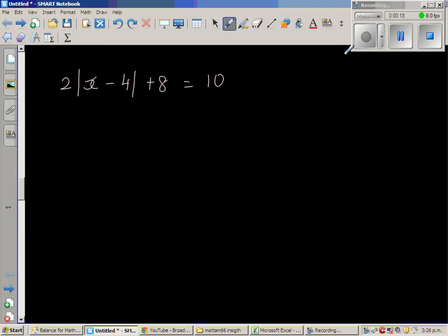So you treat it as you're solving a simple linear equation. When you're solving an equation, we want to isolate the x. The first thing that we want to eliminate or get rid of is this plus 8. So if we want to get rid of this plus 8, I'm going to take away 8 from this side. So I'm going to take away 8 from this side.